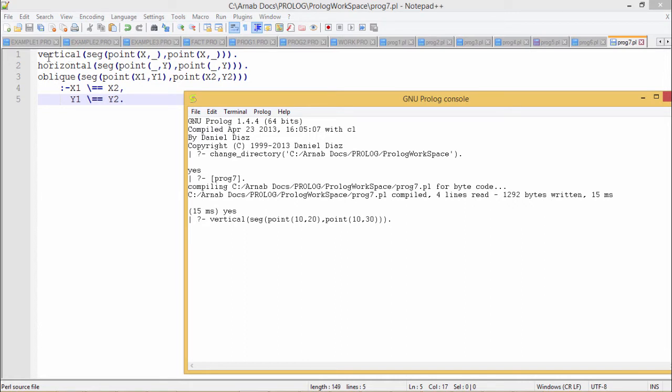We know that in case of vertical segment, the x coordinates of two end points of the segment will remain the same. In case of horizontal segment, the y points of two end points of that segment should be the same value. In case of oblique, this x to x values will be differing and these two y values will be differing. Now see, here we have written the respective program.